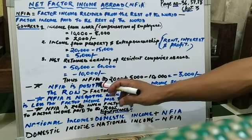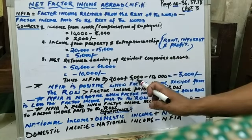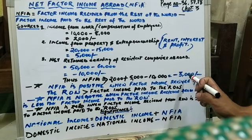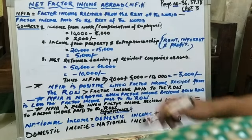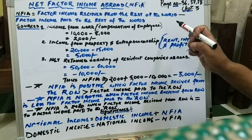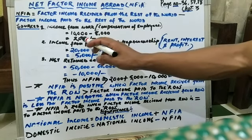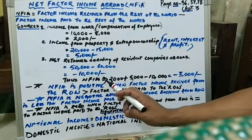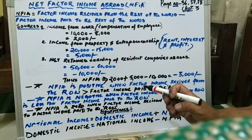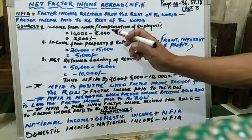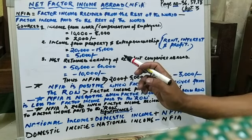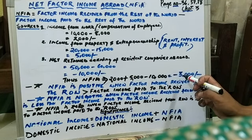So now our Net Factor Income from Abroad will be: 2,000 plus 5,000 minus 10,000, which gives us minus 3,000. You can also verify this directly: factor income received from the rest of the world — total money earned by Indian residents outside India — is 10,000 plus 20,000 plus 50,000, which equals 80,000. Factor income paid to the rest of the world — total money earned by non-residents or foreigners in India — is 8,000 plus 15,000 plus 60,000, which equals 83,000. So 80,000 minus 83,000 gives us minus 3,000. It is the same result.